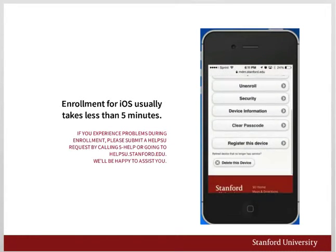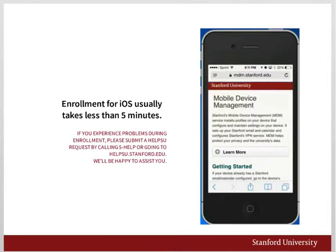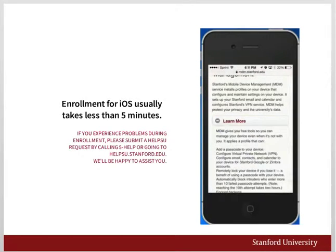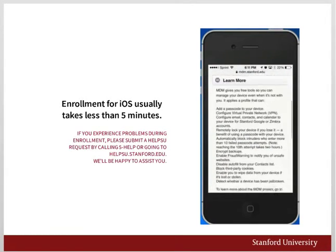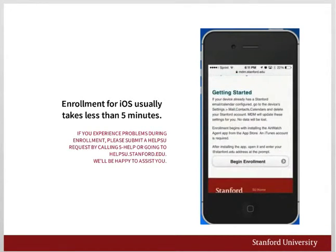Scroll down to tap Register this device. Tap Learn More to understand what MDM will change on your iOS device. If your device already has a Stanford email and calendar configured, go to Settings > Mail > Contacts > Calendar and delete your Stanford account. MDM will update these settings for you — no data will be lost.